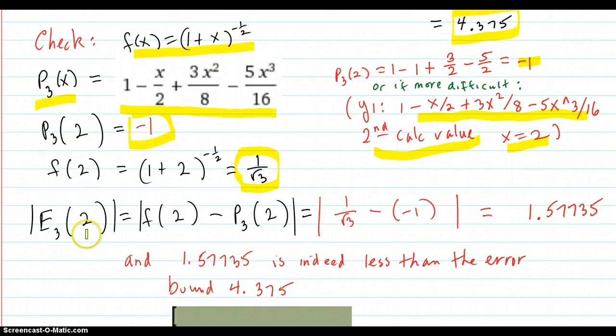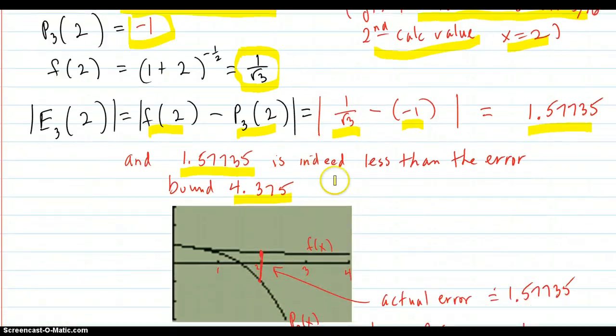So the error at x equals 2 is this subtraction there which is the 1 over the square root of 3. And our approximation by P3 is way off. It's negative 1. So the error is 1.57735. But the error bound max was 4.375. So this error that we got for the actual error is indeed less than the error bound. So that checks out.